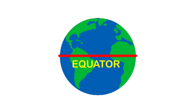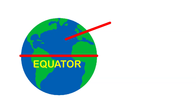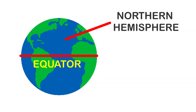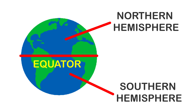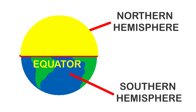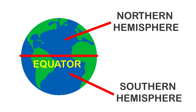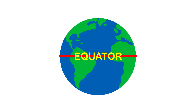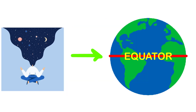Another imaginary line running on the globe divides it into two equal parts. This line is known as the equator. The northern half of the earth is known as the Northern Hemisphere and the southern half is known as the Southern Hemisphere. They are both equal halves; therefore the equator is an imaginary circular line and is a very important reference point to locate places on the earth.